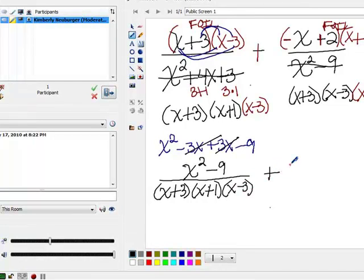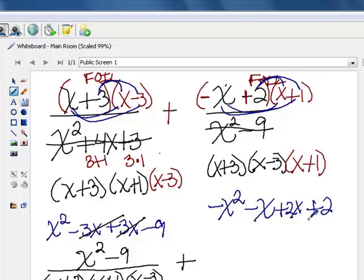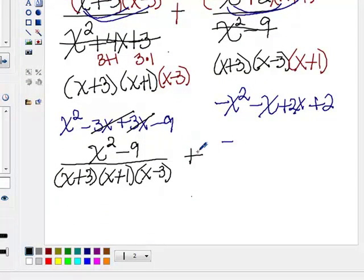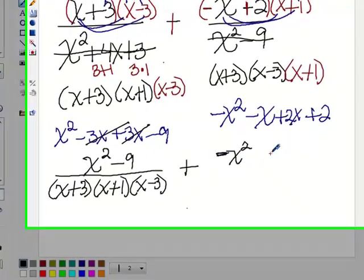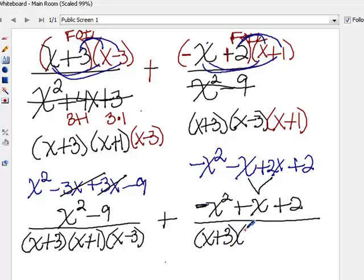Now let's look at the second one. If I foil this out, I get a negative x times an x, which is negative x squared. And then negative x times one is negative x. Two times x is positive two x. And two times one is two. Now if I combine my like terms, I get a negative x squared plus one x plus two, combining these two into that. The denominator matches the other one because we have all three factors of x plus three times x plus one times x minus three.